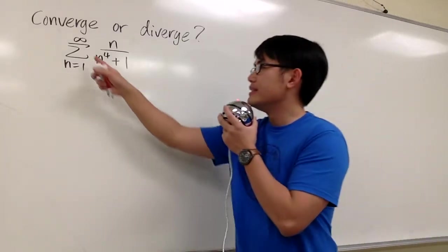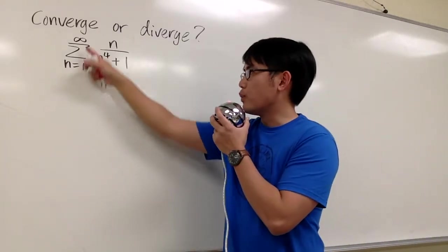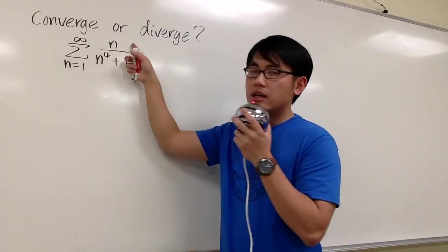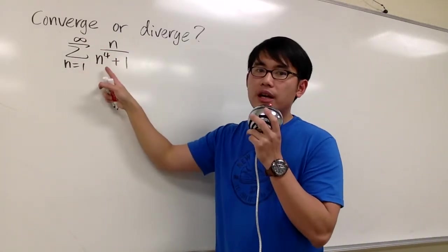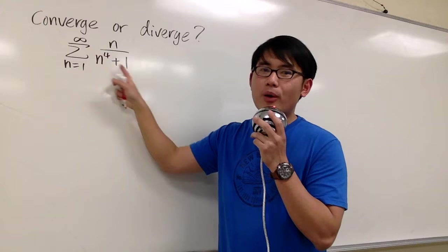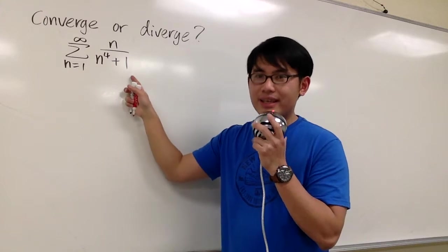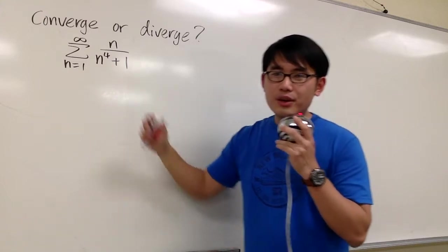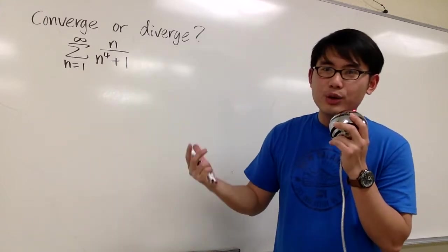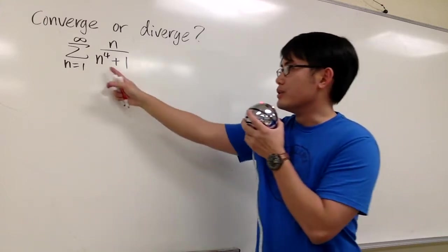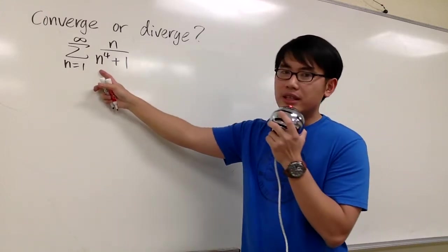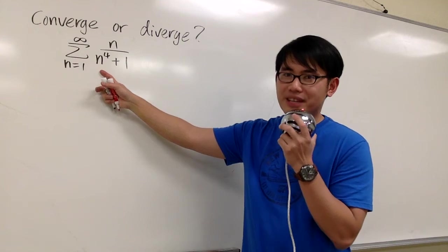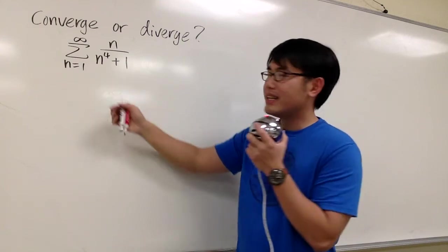Here we have sigma when n goes from 1 to infinity of n over n to the fourth power plus 1. In this video, we'll use the integral test to see if this infinite series converges or not.